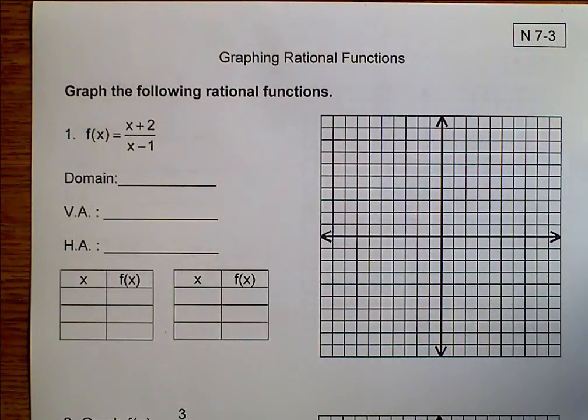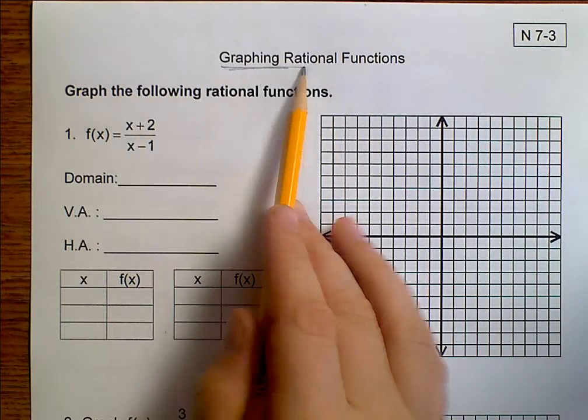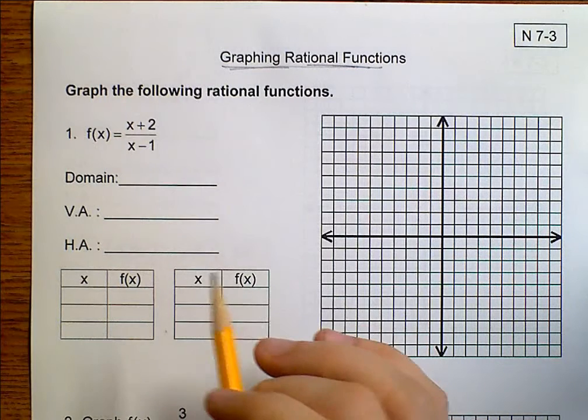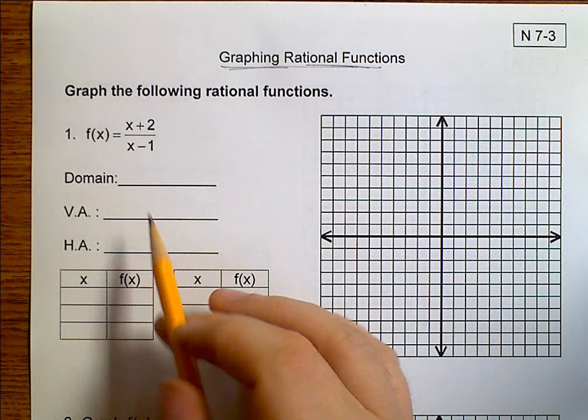Hello, this is Algebra 2, Topic 7-3. We've talked about vertical asymptotes and horizontal asymptotes for rational functions. Well, now we're going to take that information and use it to graph rational functions. So, let's go ahead and look at this.